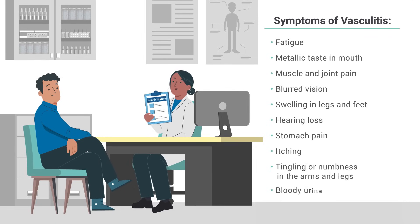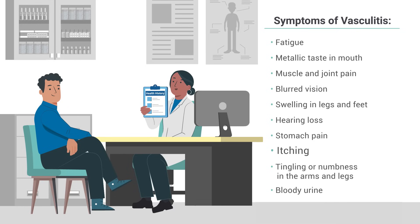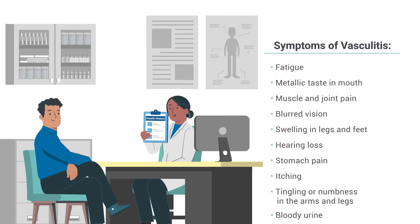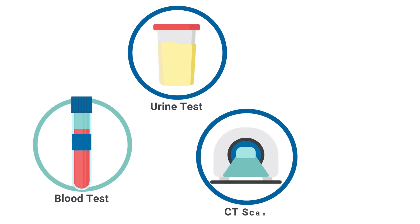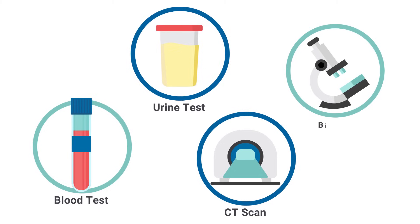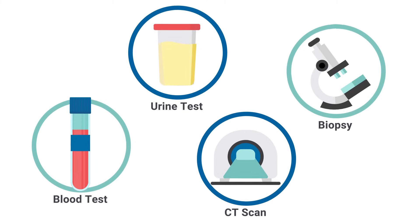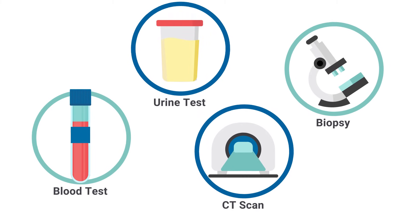Kidney symptoms include bloody urine, swelling in your legs and feet, itching, and a metallic taste in your mouth. Your doctor may do a blood test, urine test, CT scan or biopsy to find out if you have vasculitis and which type you have.